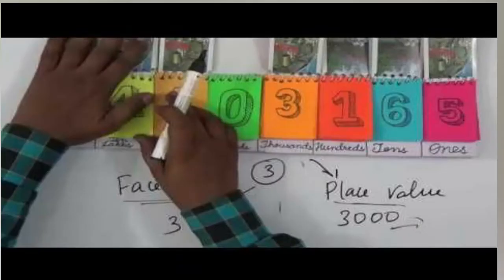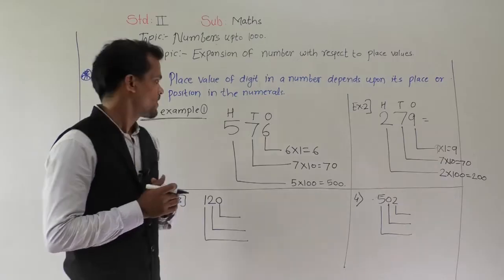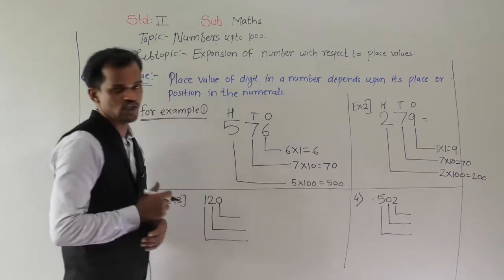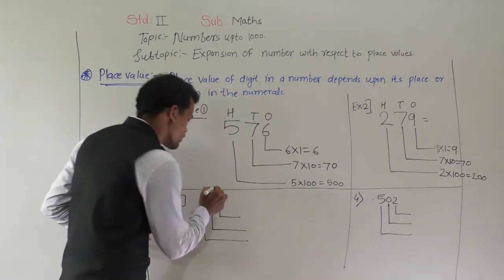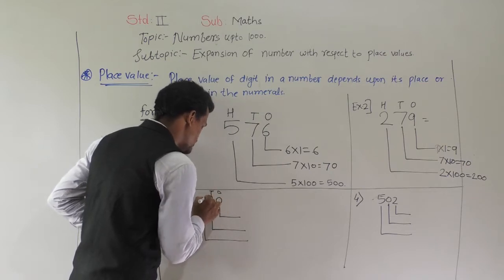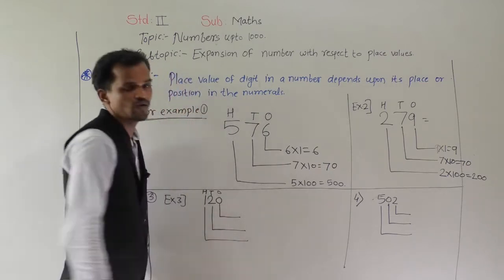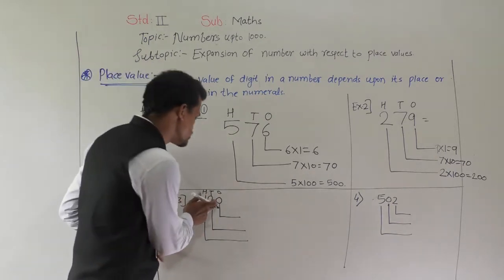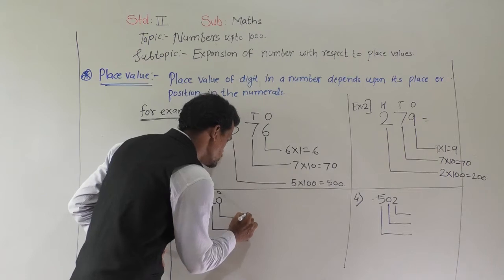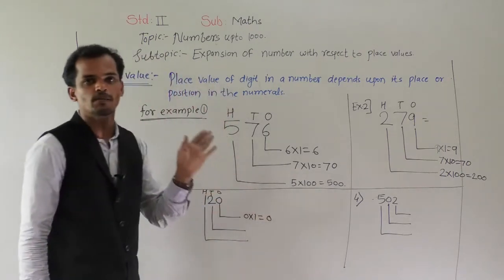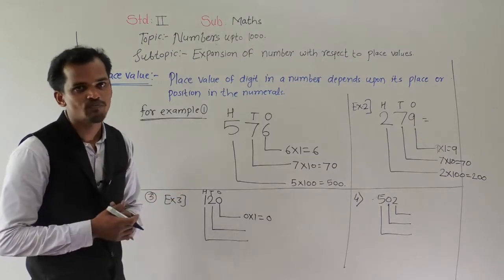The place value of a digit depends on its place. Next example: 120. Here, 0 comes at ones place, 2 comes at tens place and 1 comes at hundreds place. Now we will see the place value of each digit. 0 comes at ones place, so 0 times 1 is equal to — you know, any number multiplied by 0, the answer will be 0.